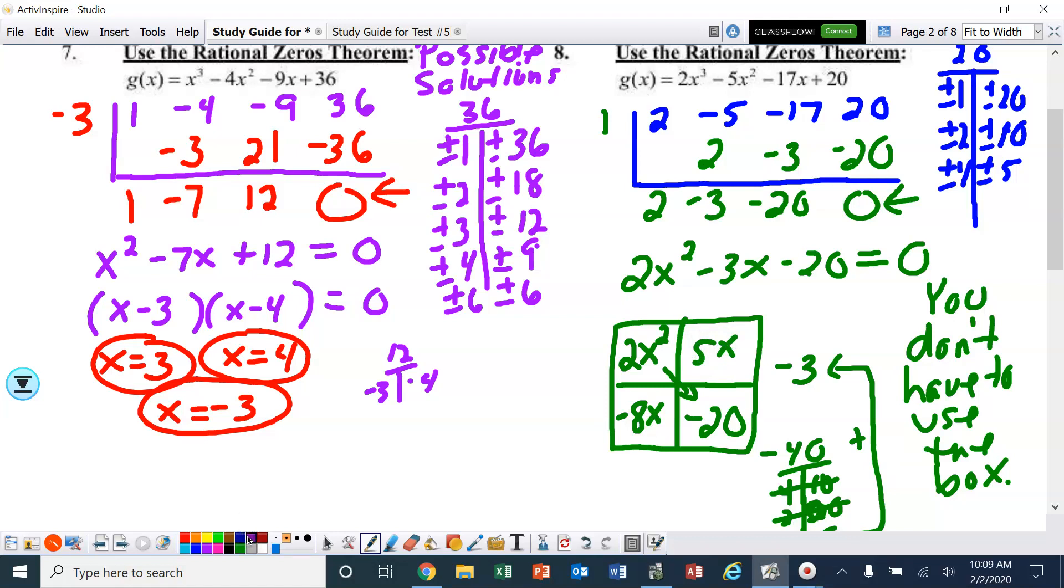The GCF of the top two is x. The bottom two, keeping the sign closest to the edge, is -4. So one of my factors is x minus 4. Now the left two boxes, I've got 2x. And the right two boxes, I have plus 5. So that's my other factor, 2x plus 5. Set that equal to 0.